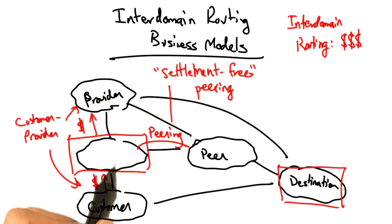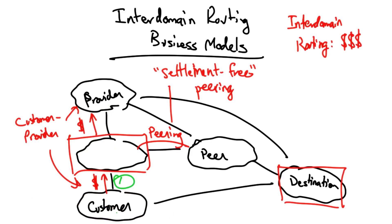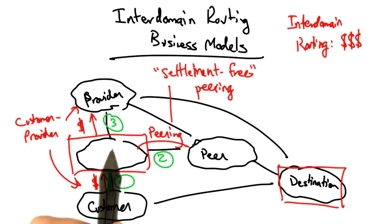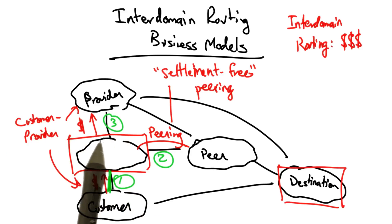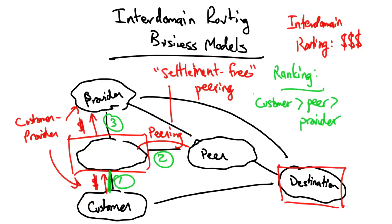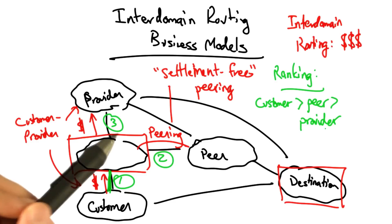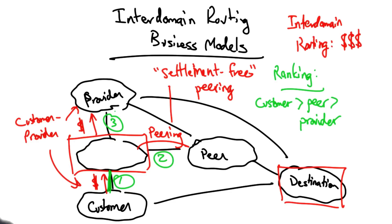Given three possible ways to reach the destination, this AS is first going to prefer a route through its customer, because regardless of the direction of traffic on this link, money is always flowing from the customer. The peering link is second most preferable because it's free. The least preferable route is through the provider, because the AS has to pay money every time it sends traffic on this link. This leads to the basic rules of preference: customer routes are preferred over peer routes, which are in turn preferred over provider routes.